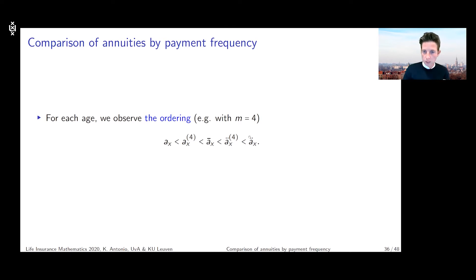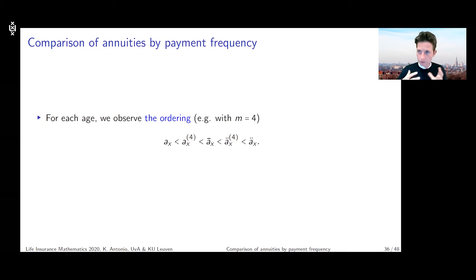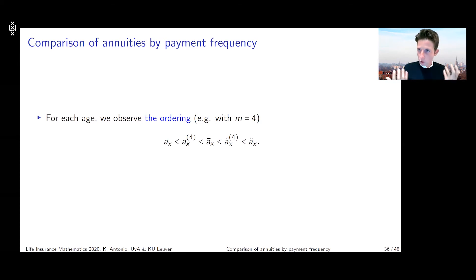At the right-hand side we have ä_x, the annuity-due that pays annually at the beginning of the year as long as you are alive. At the very left-hand side we have a_x, which pays annually but at the end of the year. In between we have a^(4)_x, which pays every quarter at the end of the quarter, and ä^(4)_x, which pays every quarter at the beginning of the quarter.